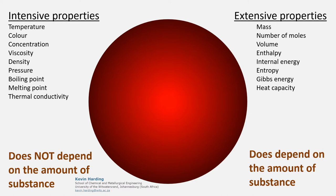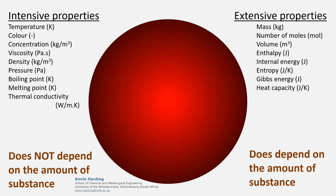Extensive properties include those already mentioned, as well as many relating to energy. It may be easier to see this if we include the common units for each property. The more substance we have, the more energy the system will contain.